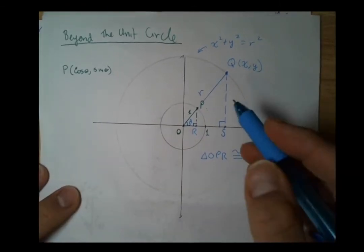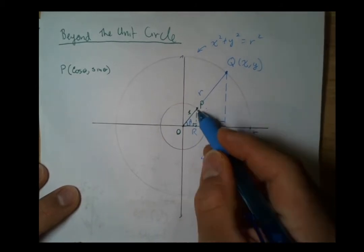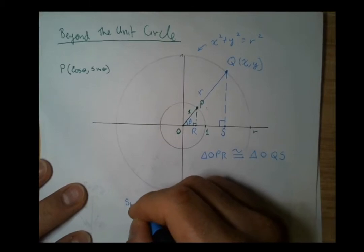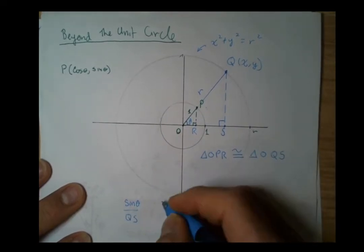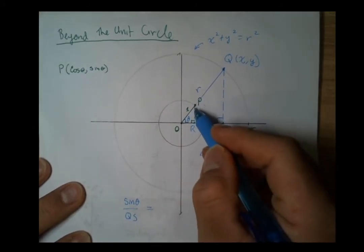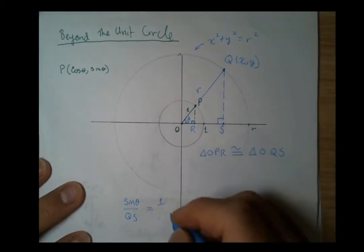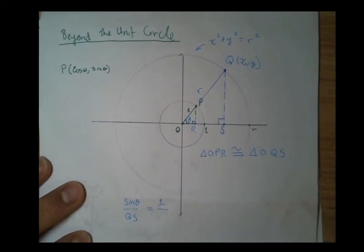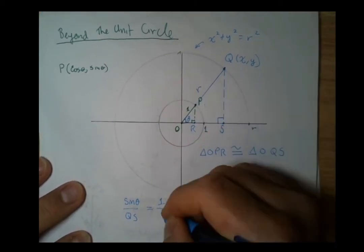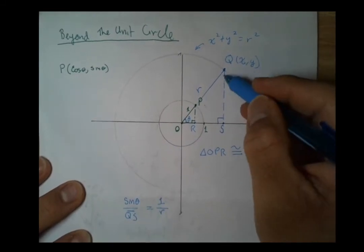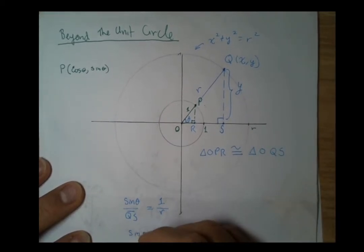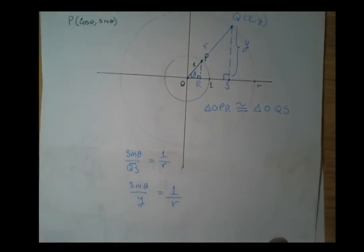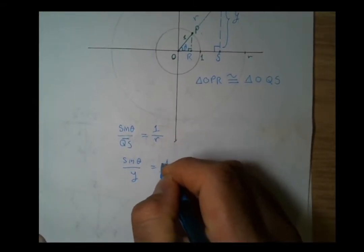For this smaller triangle, the vertical side is sine theta. The ratio of the corresponding side QS equals the ratio of the hypotenuses: sine theta over y equals 1 over r. QS is this length segment, which also has value y. Solving the proportion by cross multiplication, we get y equals r sine theta.